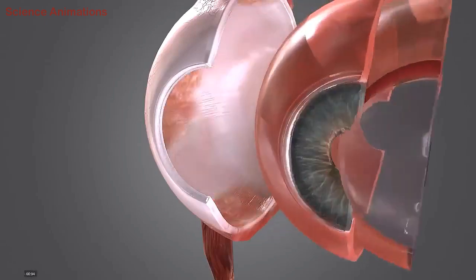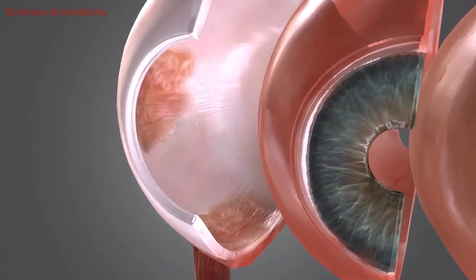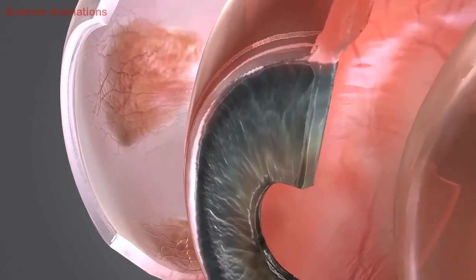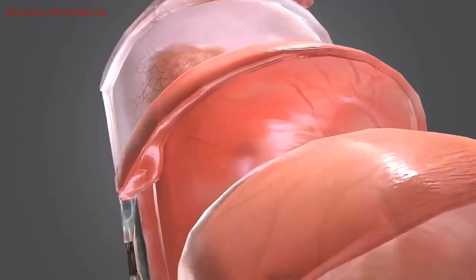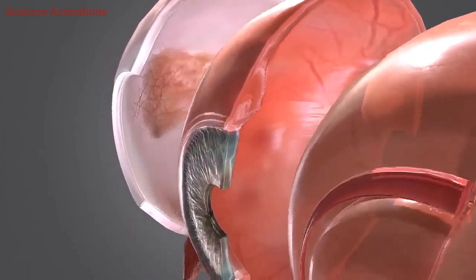The middle layer of the human eye is the vascular layer. It is called the vascular layer because it supplies blood vessels to the eye. The middle layer contains the choroid, ciliary bodies, and iris.